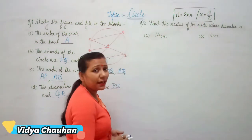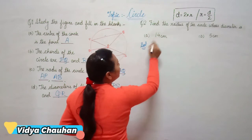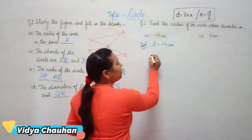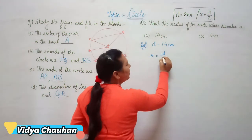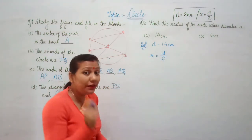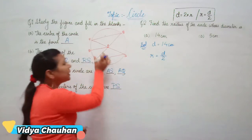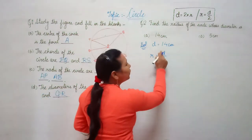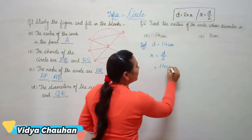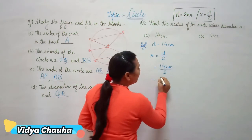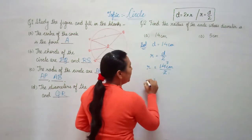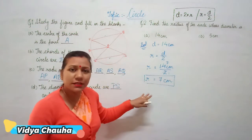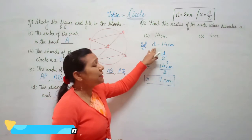In the first part, diameter is given as 14 centimeters and we need to find the radius. Radius equals diameter divided by two, because radius is half of the diameter. Putting in the value: 14 divided by 2 gives radius equals 7 centimeters.